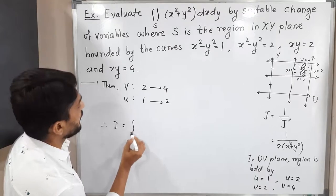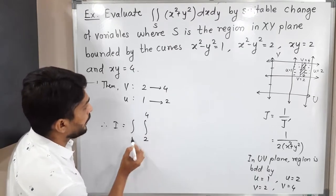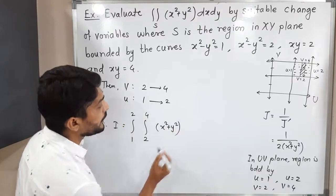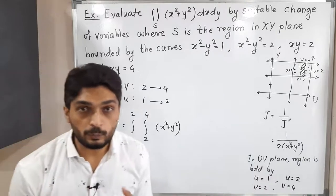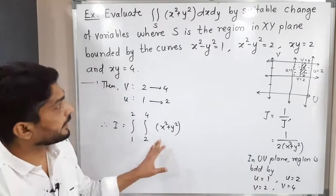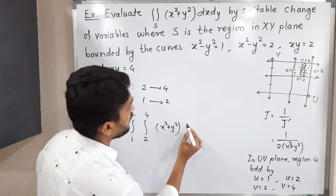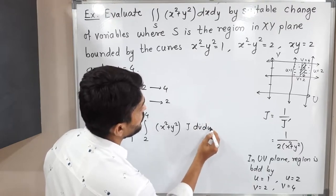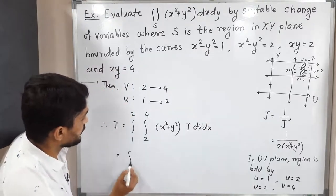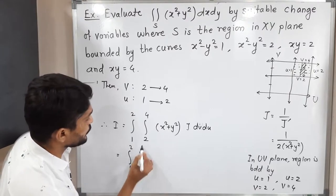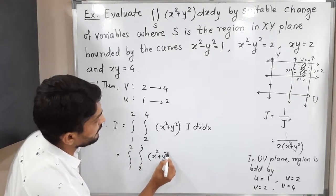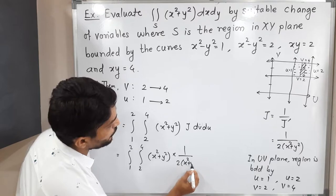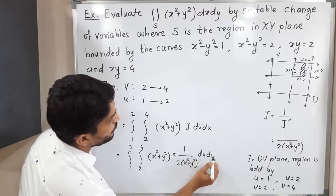So the transformed double integral is: integration from u = 1 to 2, and inner integration from v = 2 to 4, of (x² + y²) times the Jacobian dv du. Substituting the Jacobian value of 1/[2(x² + y²)], we get: integration 1 to 2, integration 2 to 4 of (x² + y²) × 1/[2(x² + y²)] dv du.